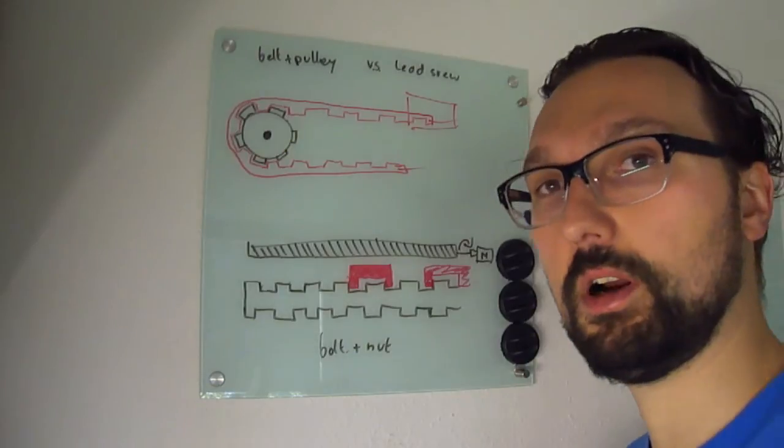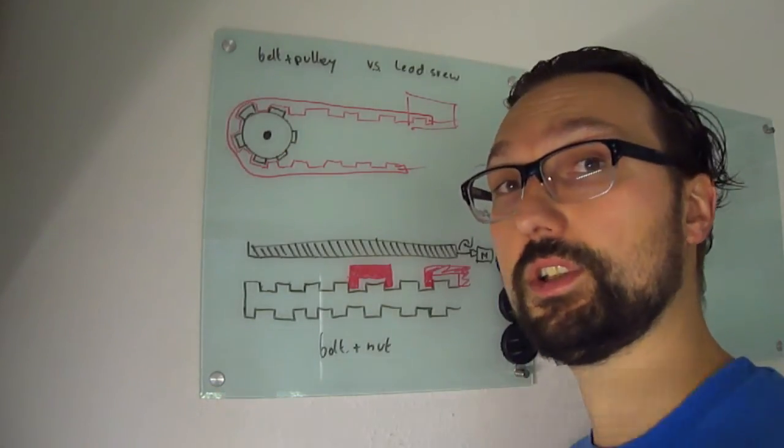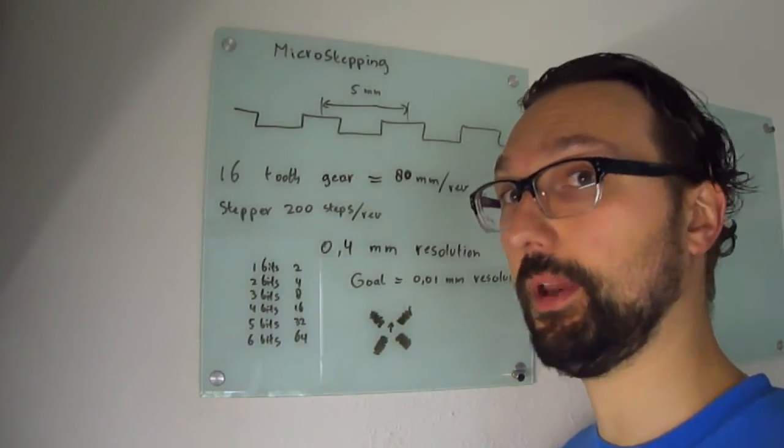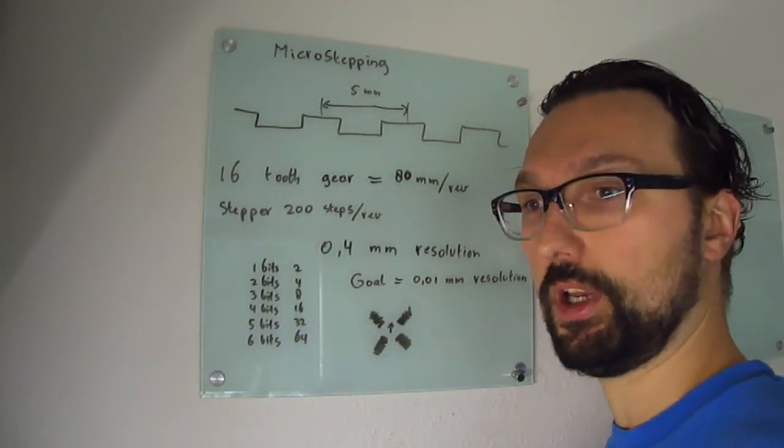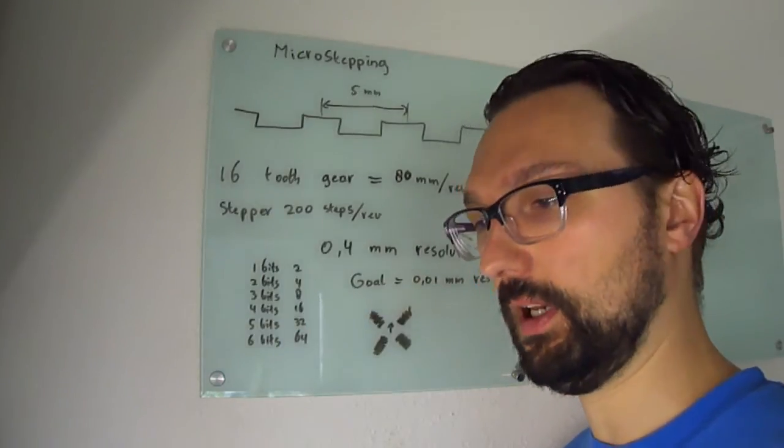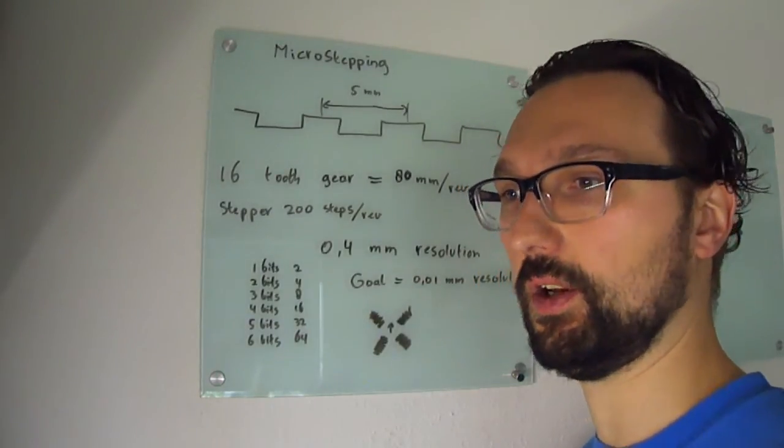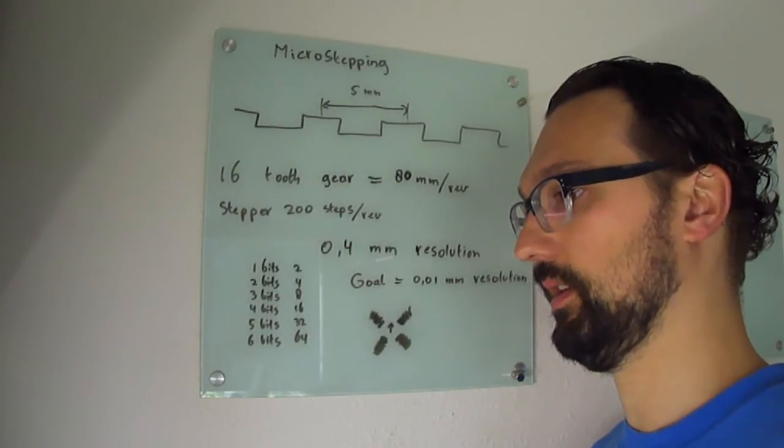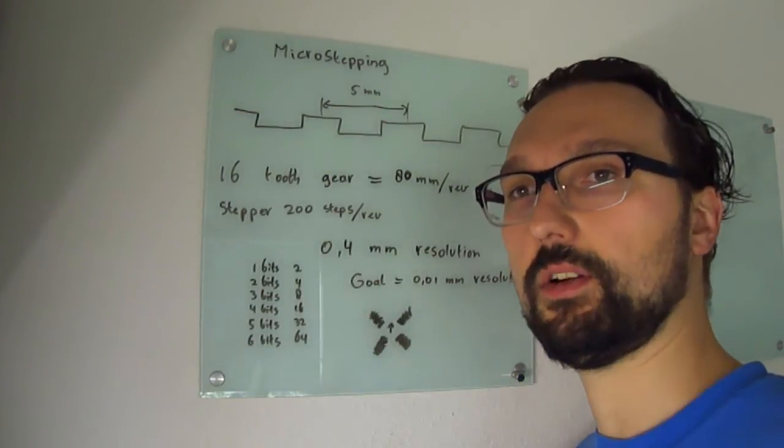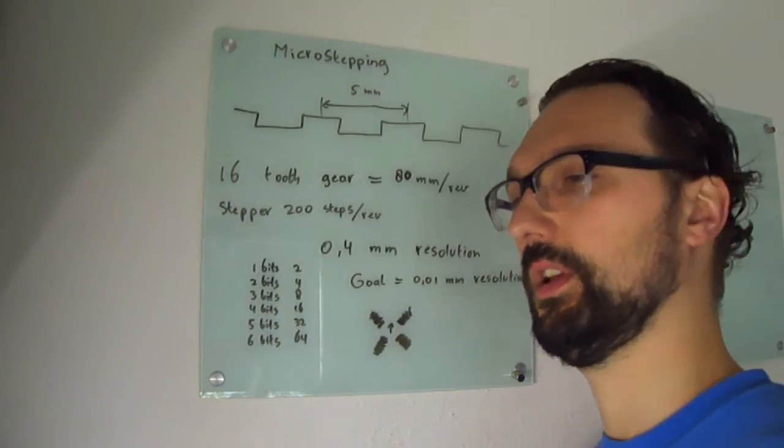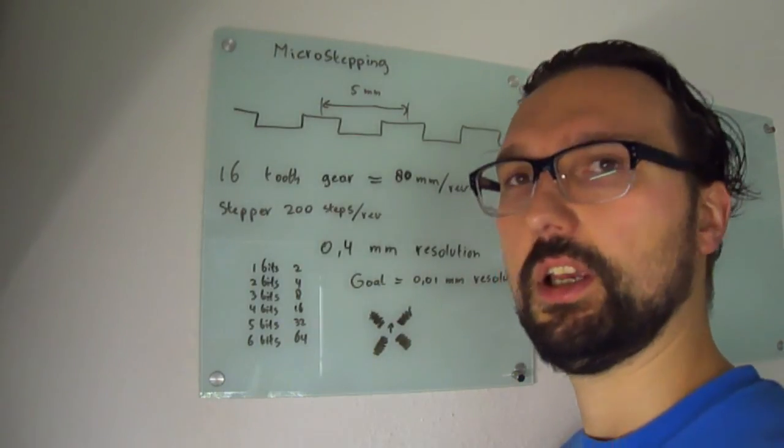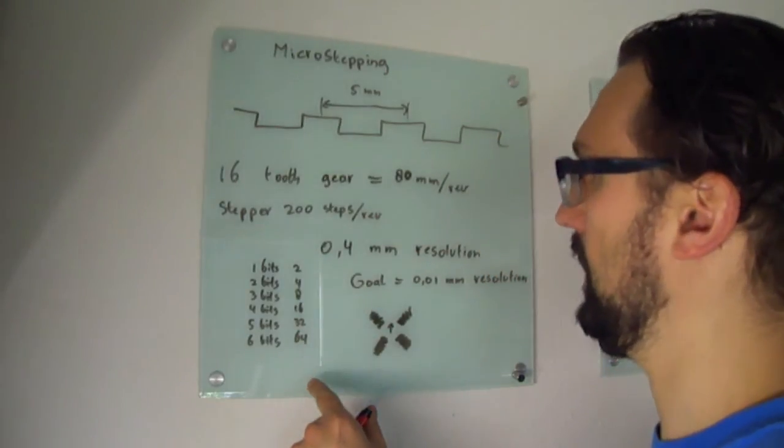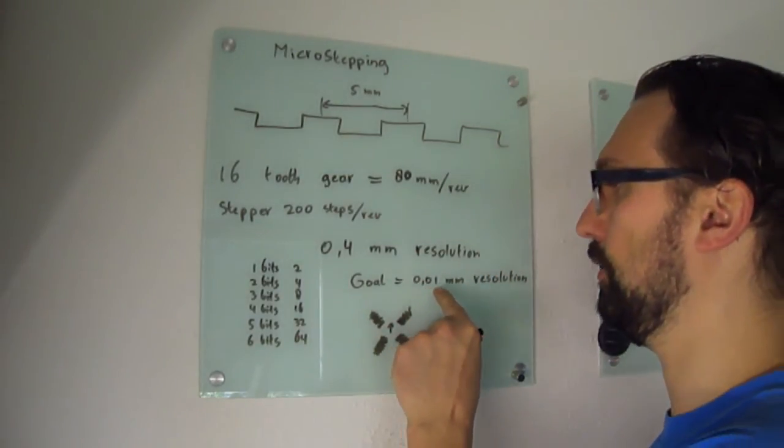And I want to talk to you about microstepping. So what is microstepping and why do I need it? Well since I'm working with the belt pulley system, the resolution isn't high enough because I did some research. And what is the standard industry standard for a really high-end professional CNC machine? The smallest step you should be able to take is 0.01 millimeters.